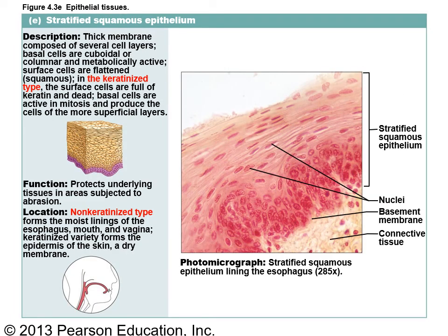Stratified squamous epithelium has multiple layers and there are two types. Keratinized stratified squamous is a dry membrane like the surface of the skin — the outer layers of cells are dead. Non-keratinized stratified squamous is a wet lining; a common example is the vagina, which is also seen in lab slides for those in the hybrid lab section. So that's the wet membrane versus dry membrane distinction.